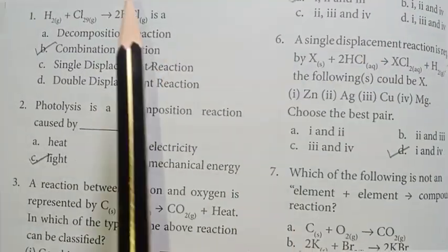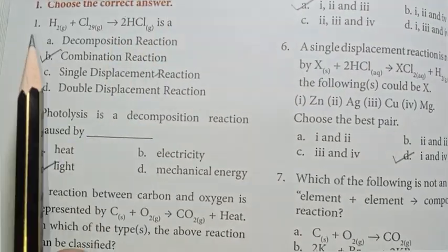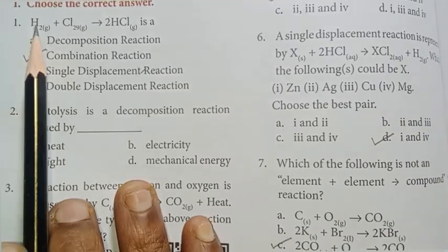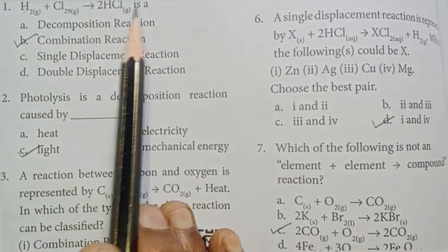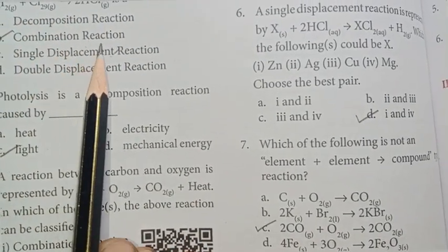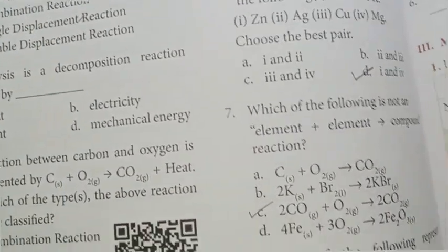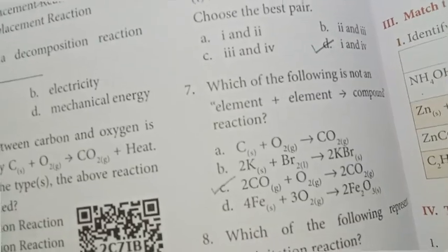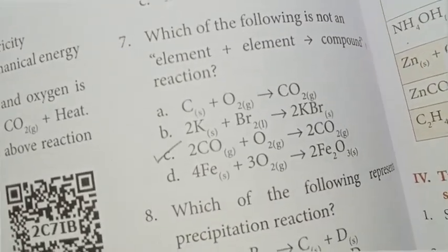Choose the correct answer. First one: hydrogen plus chlorine gives 2HCl. This is a combination reaction. Answer: combination reaction.